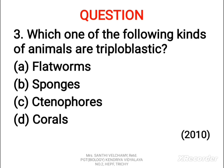The third question: which one of the following kinds of animals are triploblastic? A) Flatworms, B) Sponges, C) Ctenophores, D) Corals. The correct answer is A, Flatworms. Most multicellular animals belonging to phylum Platyhelminthes to phylum Chordata are triploblastic. Ctenophores, Sponges, and Corals are diploblastic. Flatworms are correct because they come under Platyhelminthes.